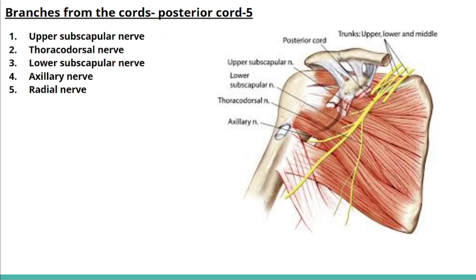The posterior cord also gives 5 branches: the upper subscapular nerve, thoracodorsal nerve, lower subscapular nerve, axillary nerve, and radial nerve. We will discuss these branches in detail in another video. Bye bye then.